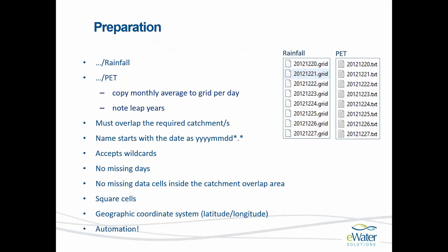Let's have a look at some of the steps needed for pre-processing these data sets. The rainfall is a daily data set and PET are monthly sets, so the first thing you have to do is convert your monthly data to a set of daily grids by copying those monthly values to a day for each day in every month. Note that there are leap years to be considered, so every four years the 29th of February must also be included.